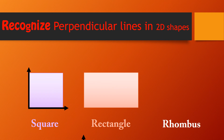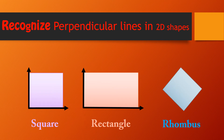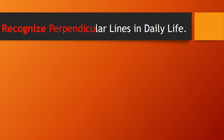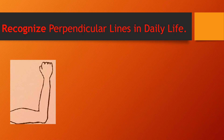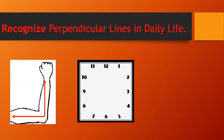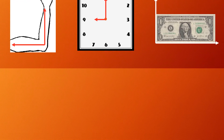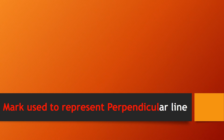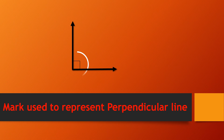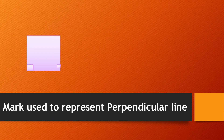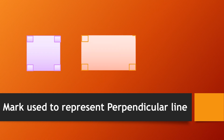We can see perpendicular lines in a rectangle and in a rhombus as well — they all have a 90-degree angle. We can also recognize perpendicular lines in daily life: in our arms, in a clock, and in a dollar knot. We can use marks to represent perpendicular lines by drawing a small box between them where they meet.